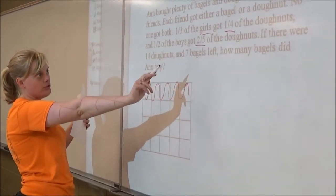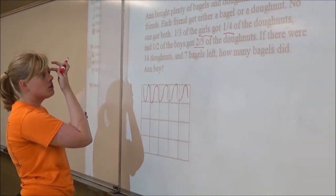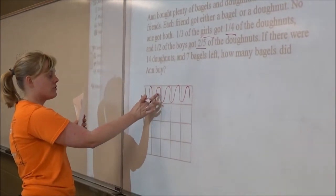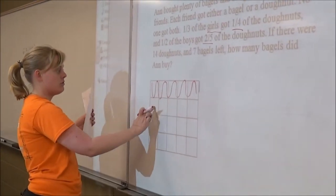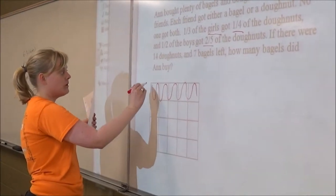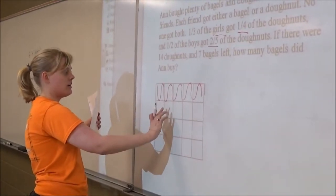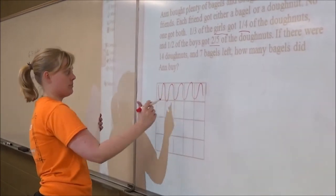Then for two fifths of the doughnuts, you wouldn't mark over these because those have already been eaten. So 1, 2, 3, 4, 5, 6, 7, 8 would be what we would have marked, so now we just have to do 8 going somewhere else. It's not this top row.